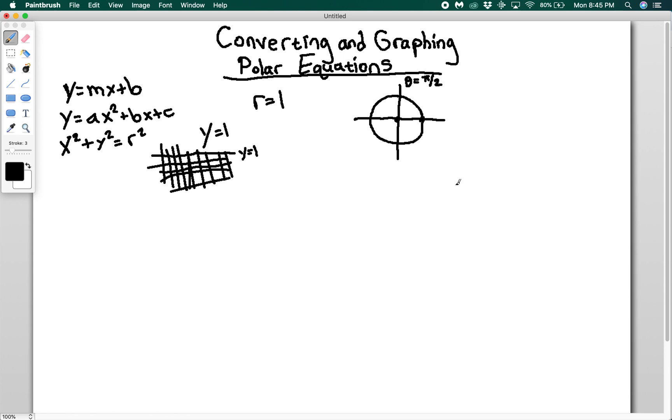So r equals 1 is actually going to be a circle centered at the pole with radius 1. How about theta equals pi over 4? Well for theta equals pi over 4, no matter what r I have, my angle is always going to be pi over 4. So I should get something like that because my angle here is always going to be pi over 4.